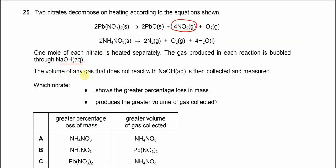The volume of any gas that does not react with the sodium hydroxide is then collected and measured. In both cases, the gas that will be collected is oxygen gas and nitrogen gas. For reaction one, oxygen gas will be collected. For the second reaction, nitrogen and oxygen will be collected.